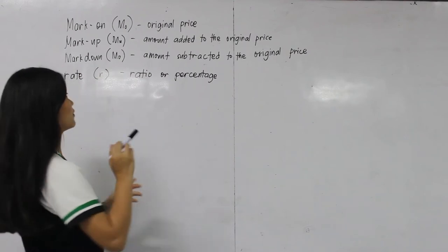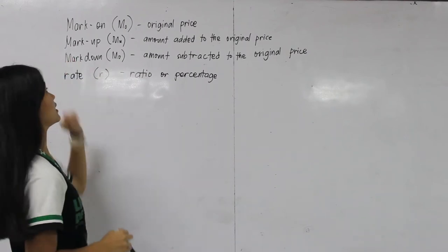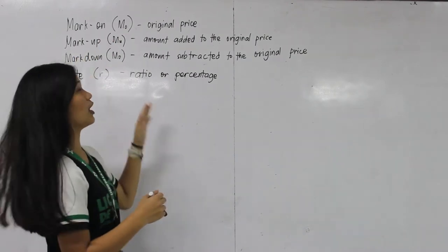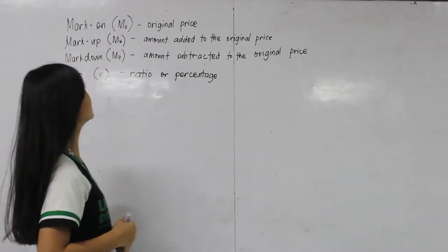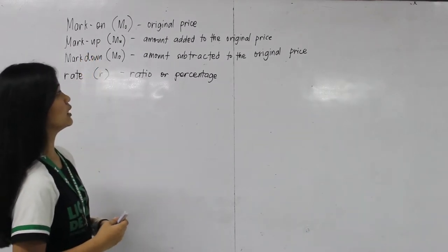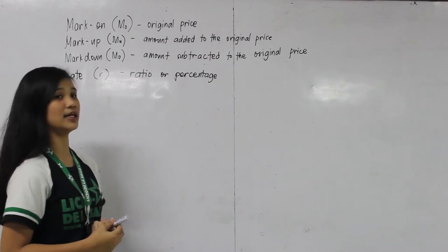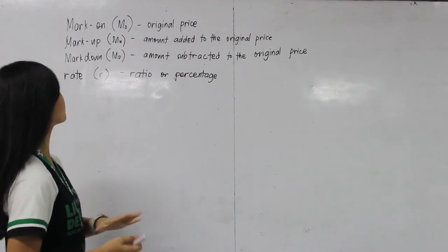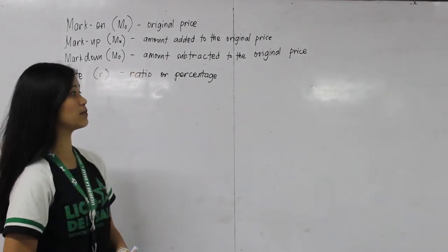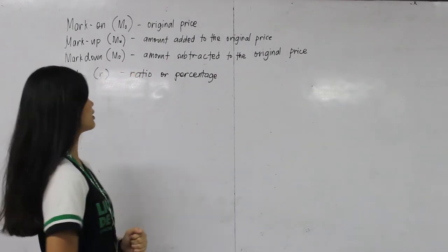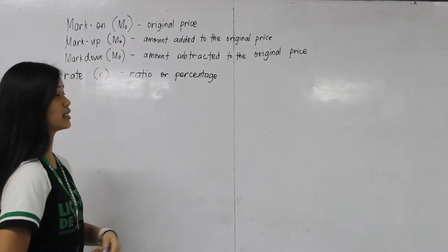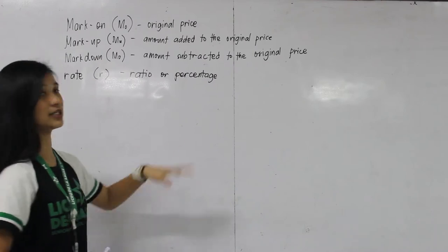First, we're going to go through these terms. First is the mark-on, denoted as AMO — it is the original price. Second is the mark-off, which is the amount added to the original price. Next is the markdown, which is the amount subtracted from the original price. And last is the rate — the ratio or percentage of the markdown or markup.